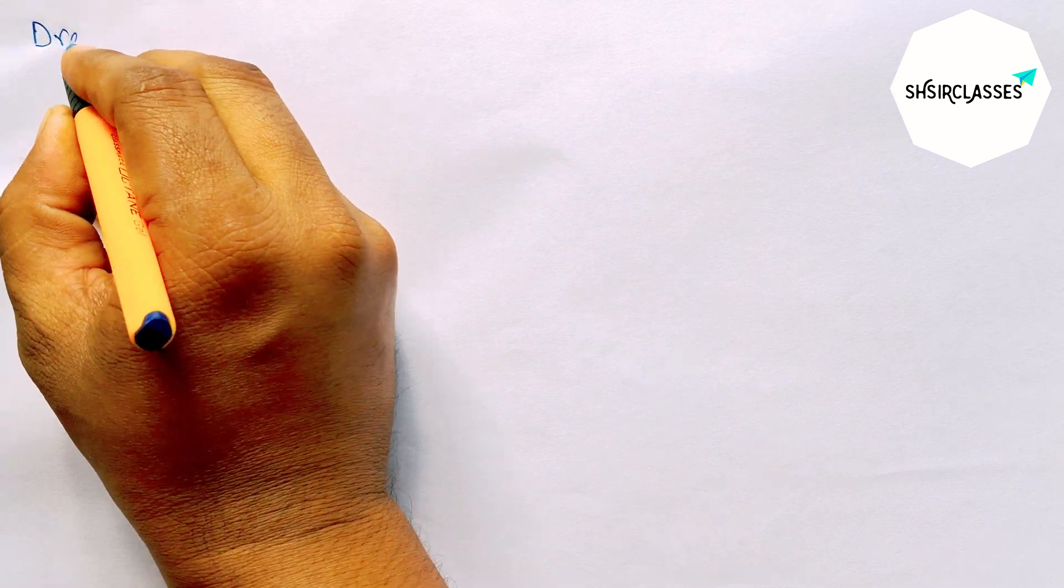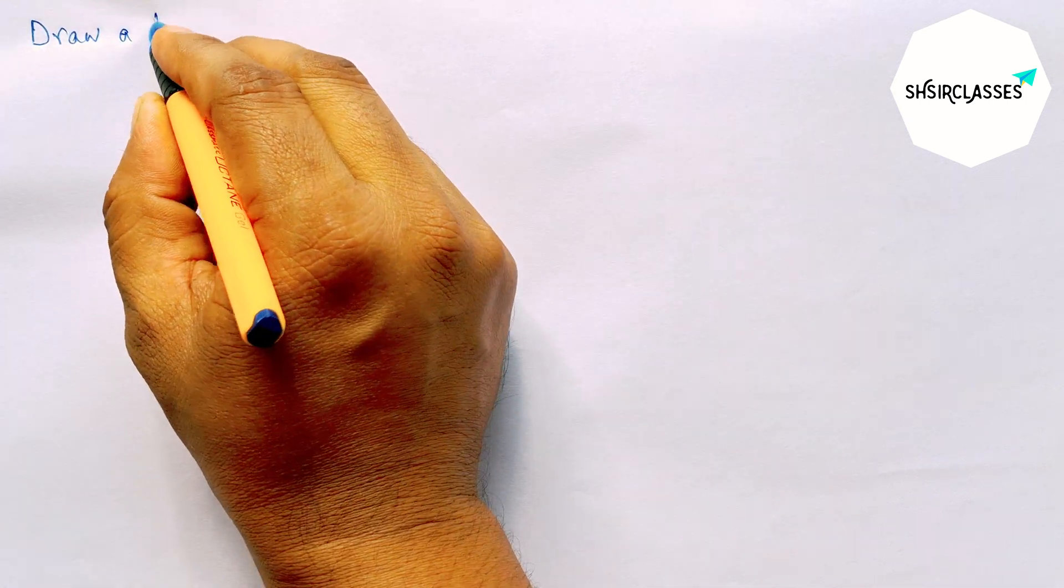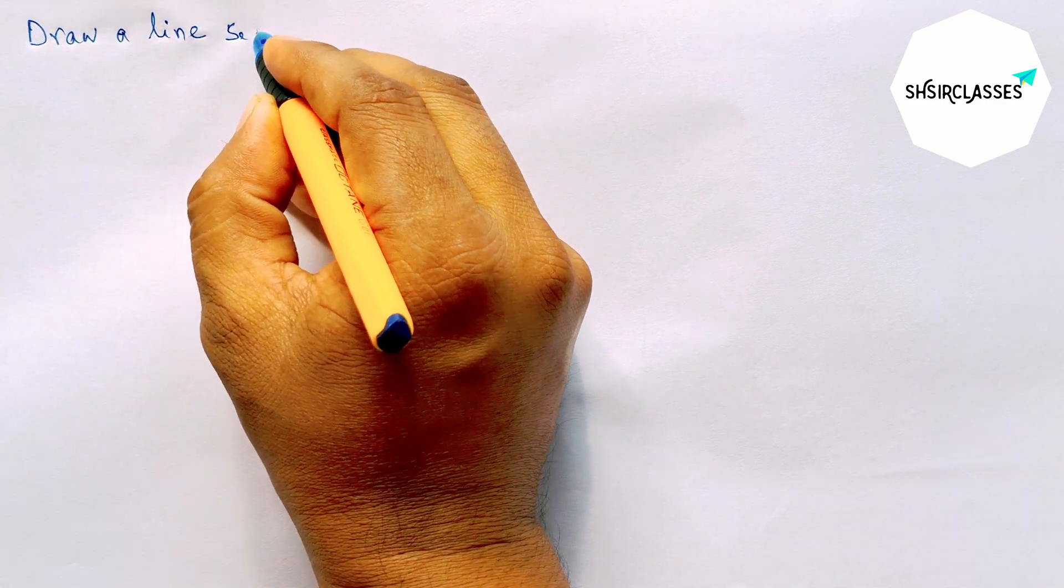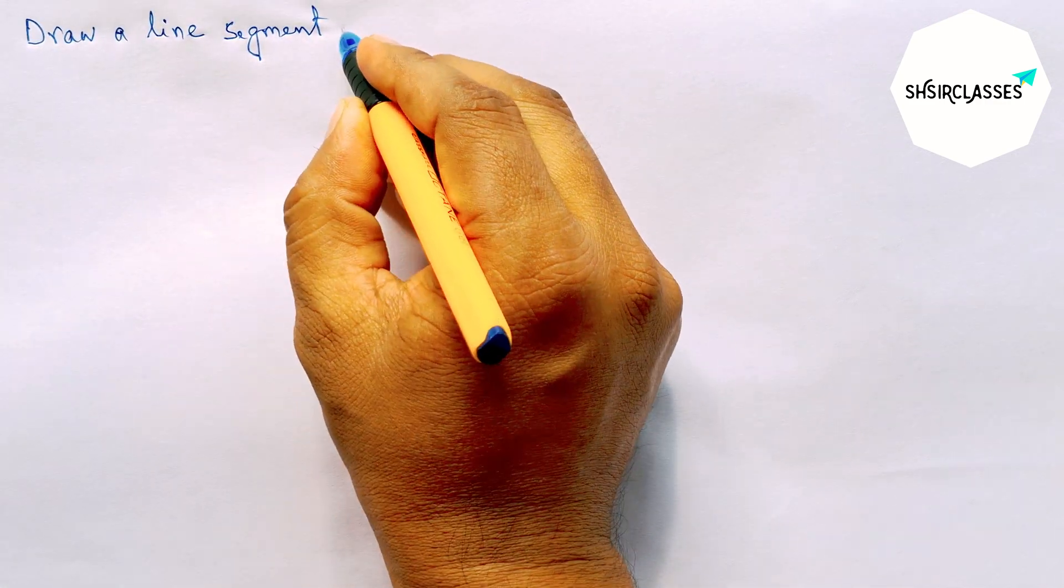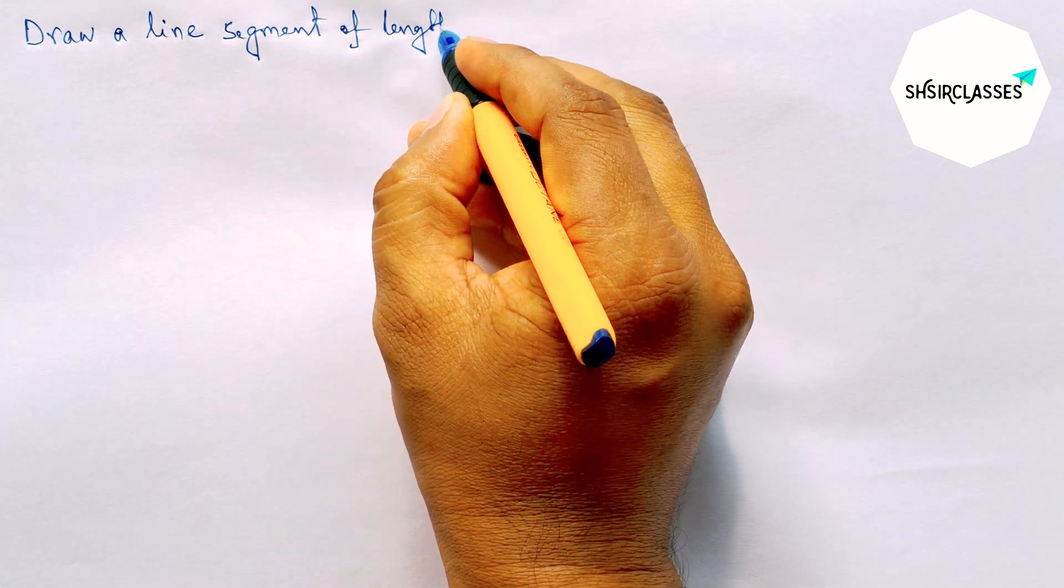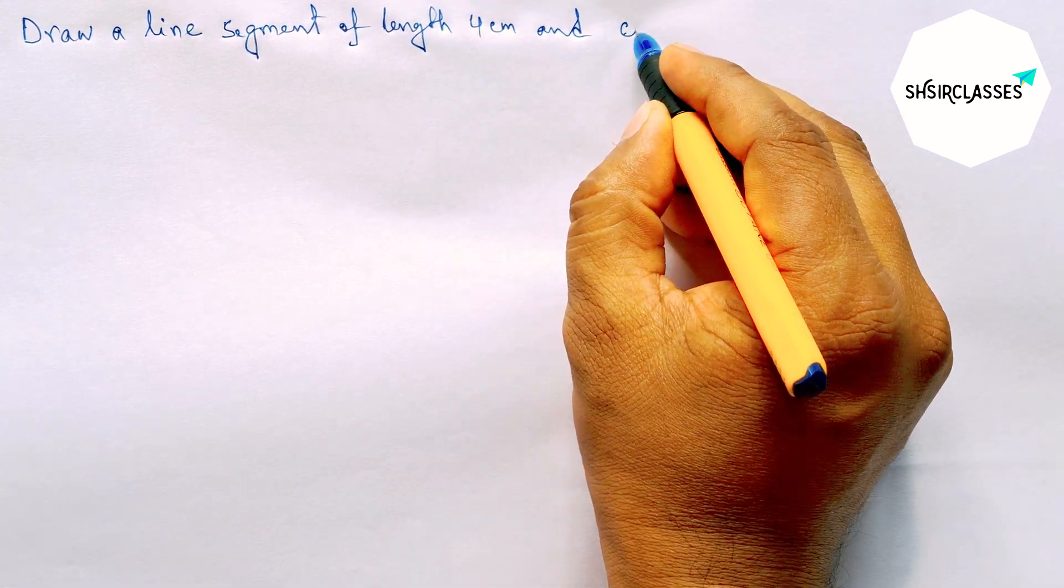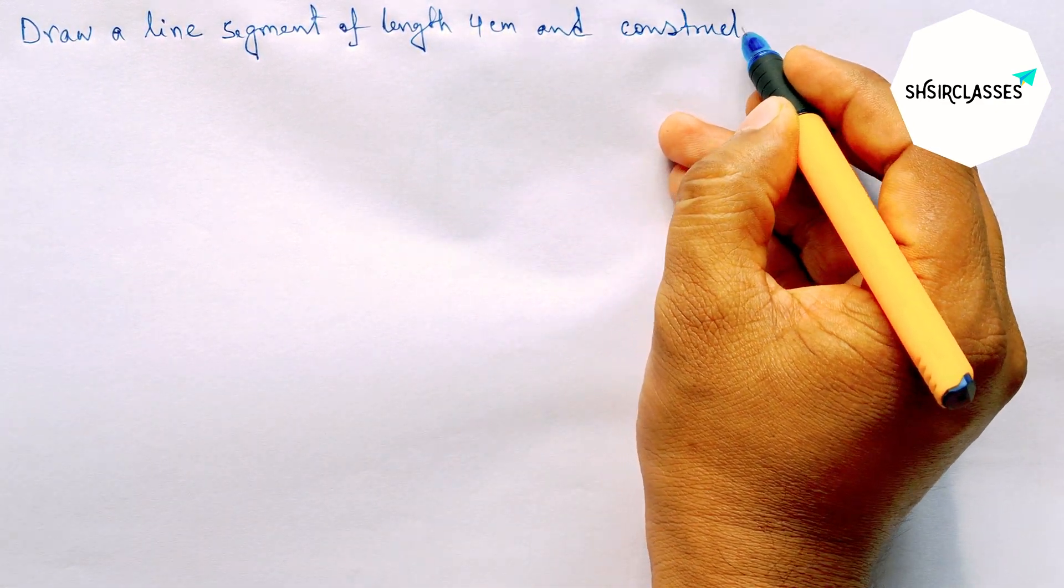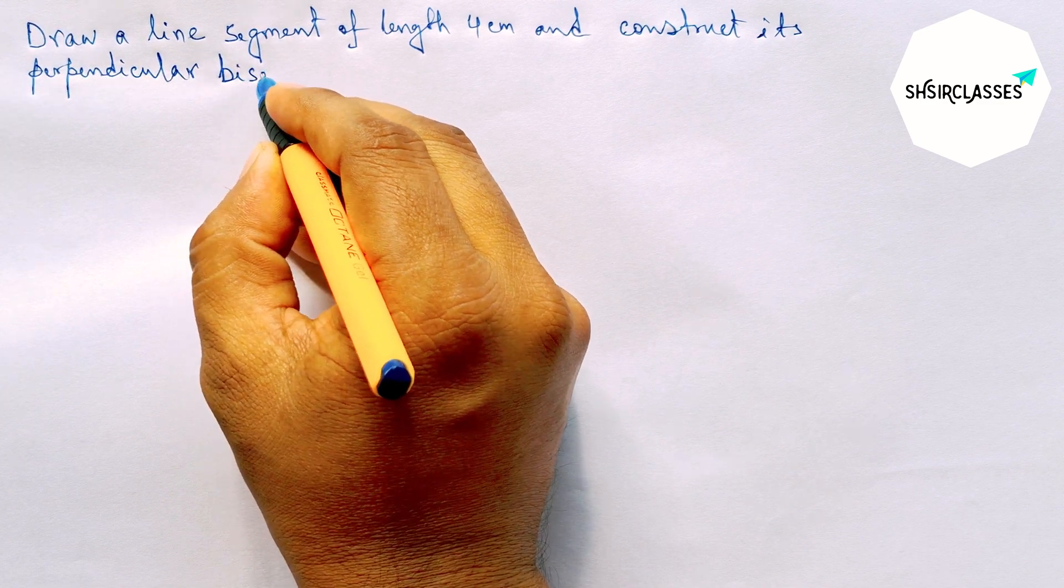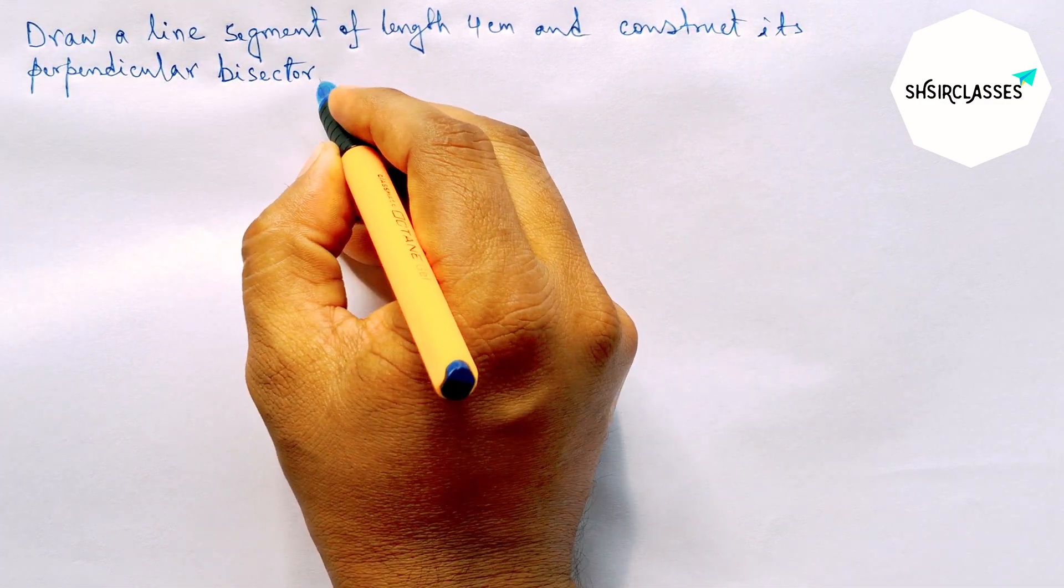Hi everyone, welcome to SA Share Classes. Today in this video, we'll draw a line segment of length 4 centimeters and construct its perpendicular bisector to the line segment AB in an easy way. So please watch the video till the end.